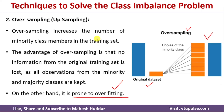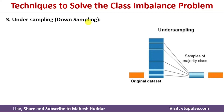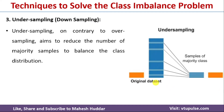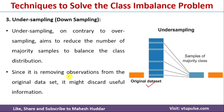The third technique is undersampling, also called downsampling. Rather than replicating minority class examples, we eliminate some examples from the majority class until we get approximately equal numbers in both classes. This is a simple technique, but the main disadvantage is that by removing examples we lose information, since every data point carries information relevant to the model.